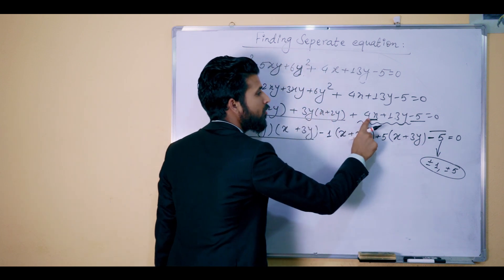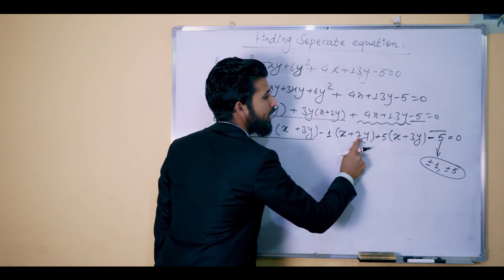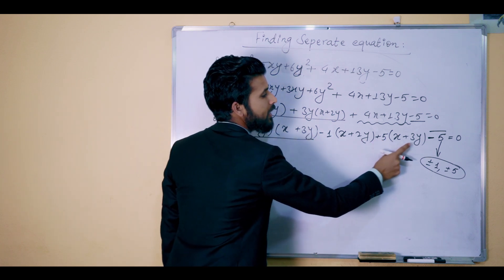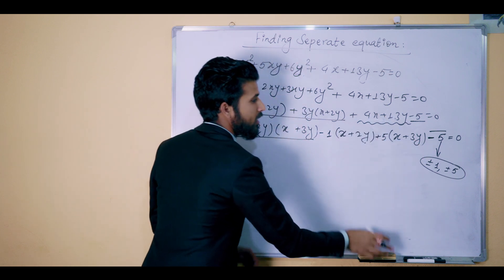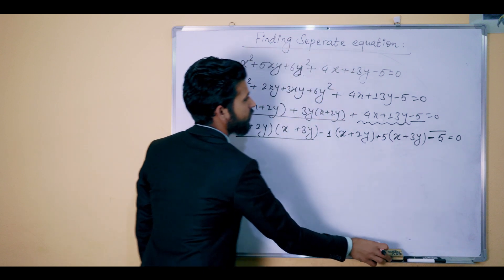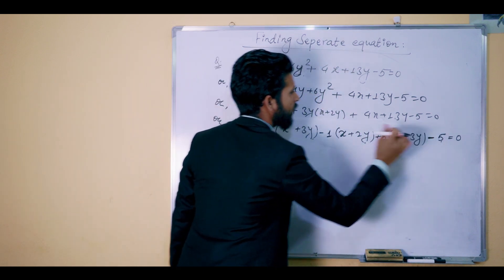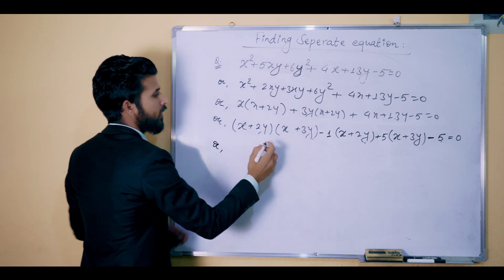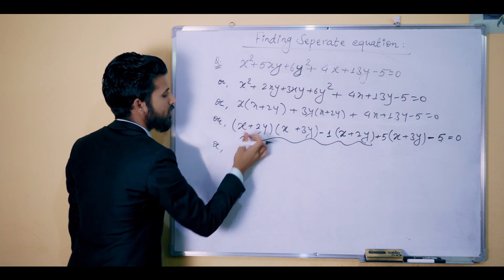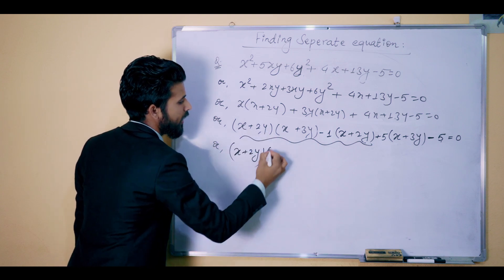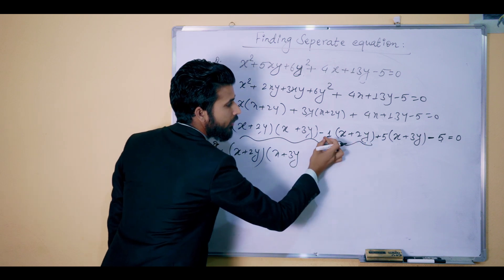We are equal to 2x, and equal to y. Minus 2y times 5 times 3 gives 15y. In 15y, 2y equals 13y, and the result equals 0. What is the meaning? x plus 2y equals minus something. What is the meaning? x plus 3y is equal to minus 1.